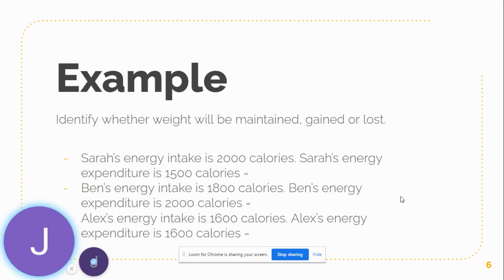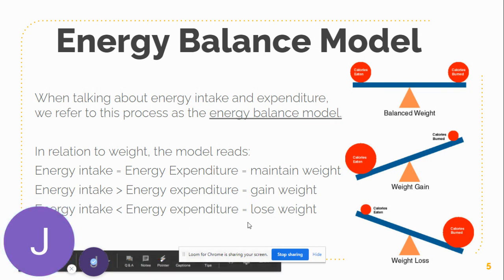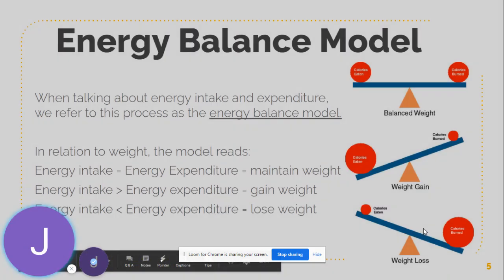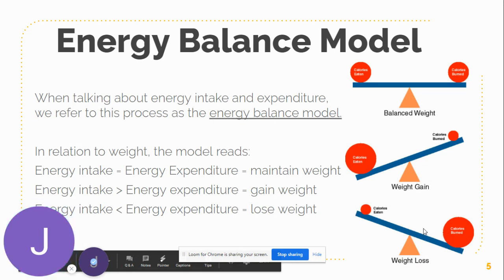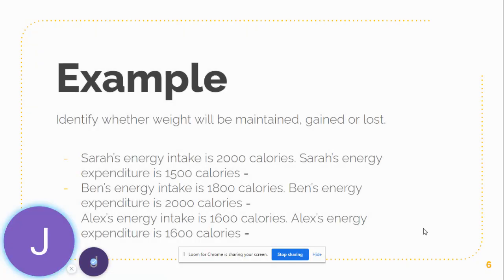Ben's energy intake is 1,800 calories and his energy expenditure is 2,000 calories. Going back to the model, Ben's energy intake is less than his energy expenditure, so he is going to lose weight. Our last person is Alex. Alex's energy intake is 1,600 calories and their energy expenditure is also 1,600 calories — they are consuming the same amount of calories that they are burning, therefore they're going to maintain their current weight.